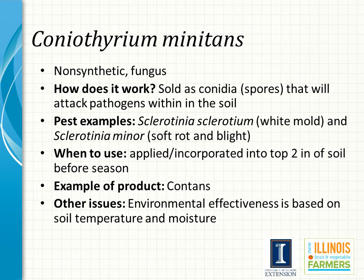Coniothyrium minitans is a fungus sold as spores that will attack pathogens within the soil. Because it is applied to the soil, it will only target soil-borne plant pathogens. These can include Sclerotinia sclerotiorum, which causes white mold, and Sclerotinia minor, which causes soft rot and blight. Coniothyrium minitans is applied and incorporated into the top two inches of the soil before transplants are planted. The effectiveness will depend on the soil temperature and the soil moisture.